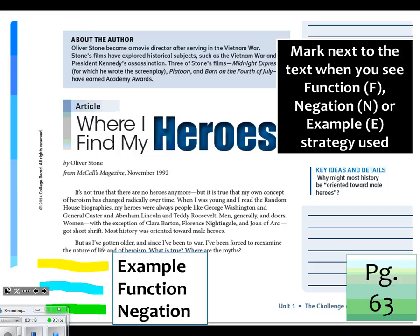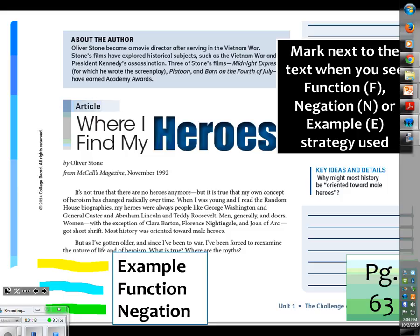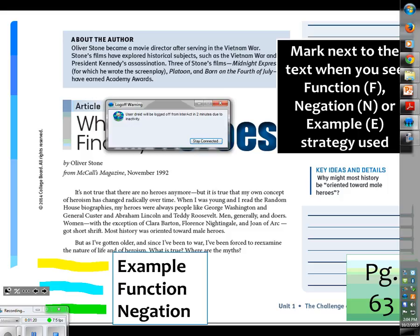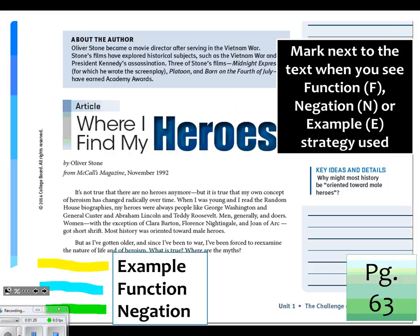Now if you took a look at the screen, what's popped up is my key of what each color is going to mean on the screen. Any time I'm showing you an example strategy, it's going to be yellow. Any time I show you function, it will be blue, any time negation green. So let's see if you're on the right track. Which type of definition strategy am I showing you? Example. So if you didn't write example down, or maybe you didn't pick up on this, I'd probably write it down.